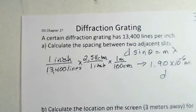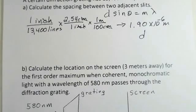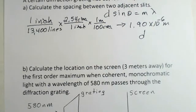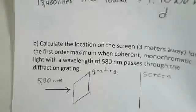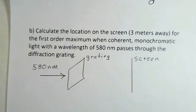So now a little bit deeper into the problem working with this. We want to calculate the location on the screen that's three meters away. Where is the first order maximum? We have coherent, so the peaks arrive at the same time at all the slits. We have monochromatic light. Wavelength is 580 nanometers, so just one wavelength of light passing through. And we want to know for this one color out in the orange kind of area. Where does this one color fall on the screen for the first order maximum?